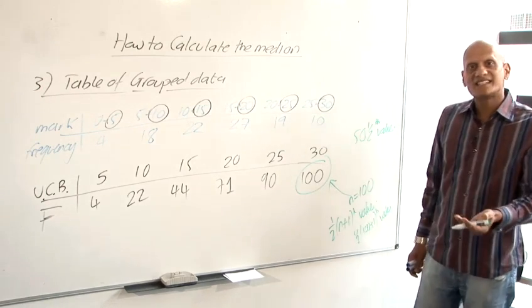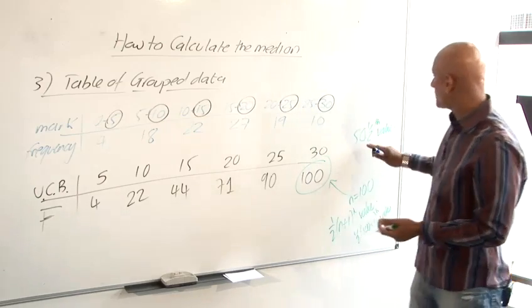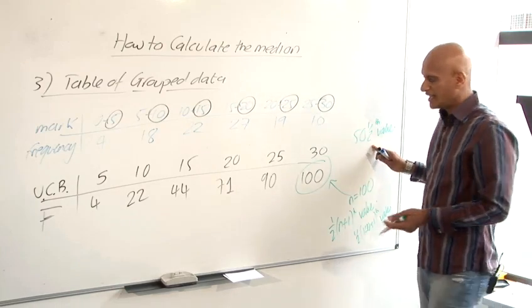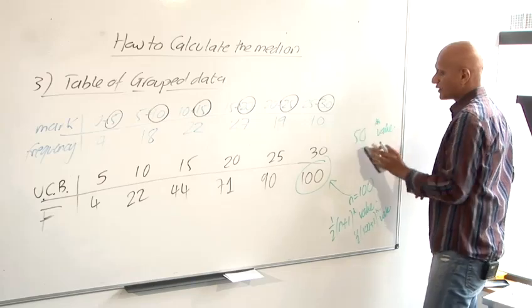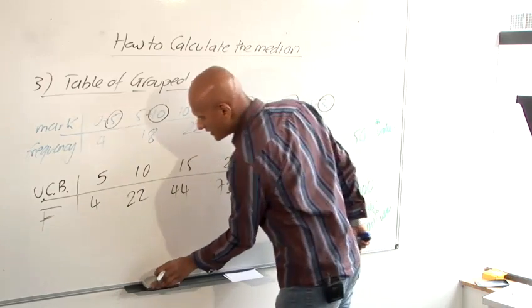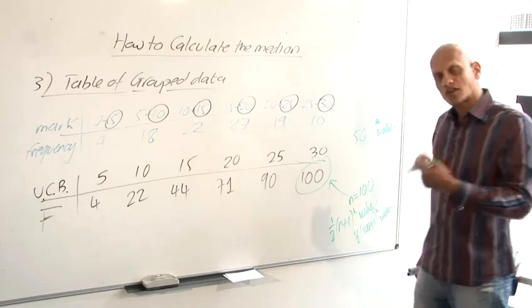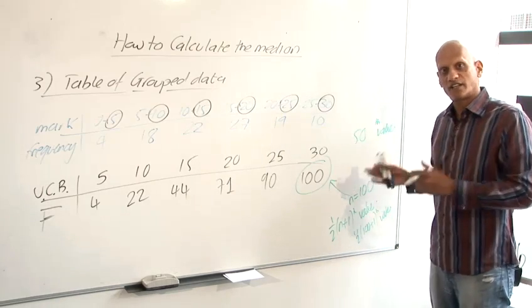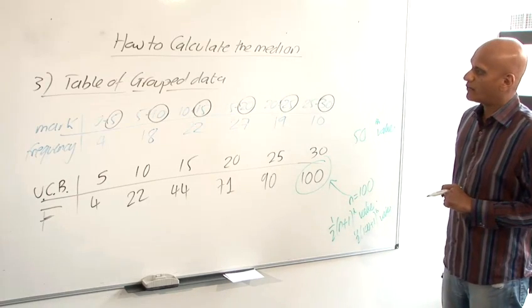Now this time, because N is large, although we're supposed to be finding the 50 and a half value, if we just approximated it as 50, I don't think anyone would really mind that much. So when you have a large sample, say bigger than 30, then if you approximate it, instead of finding the 50 and a half value, if you just round it off to the 50th value, that would be acceptable.